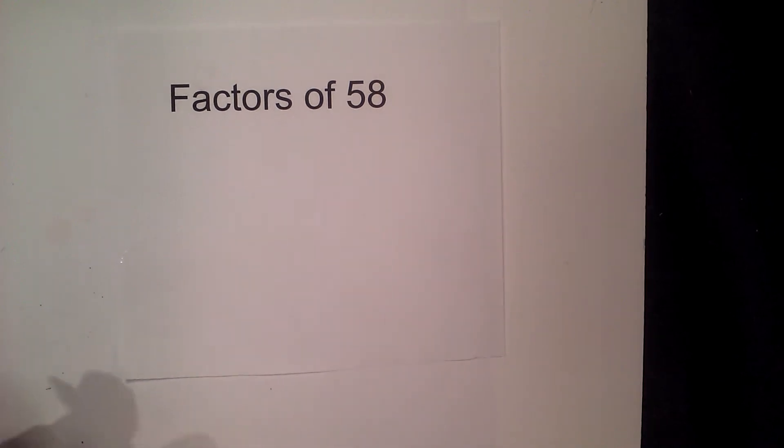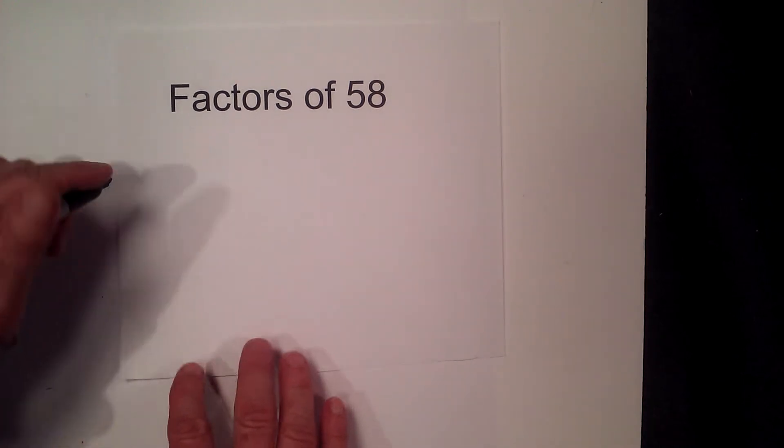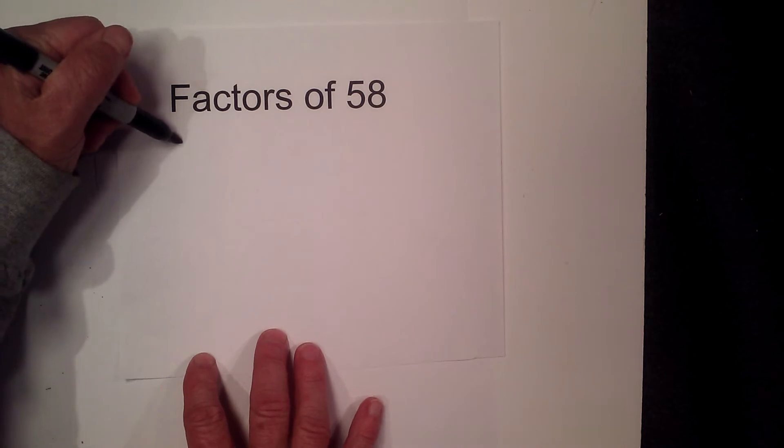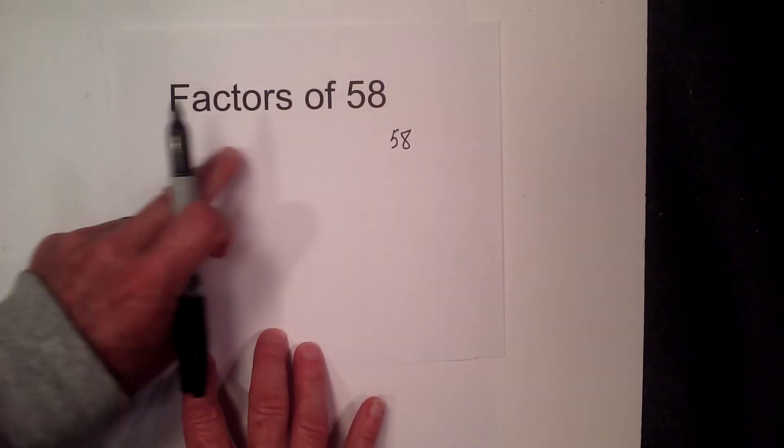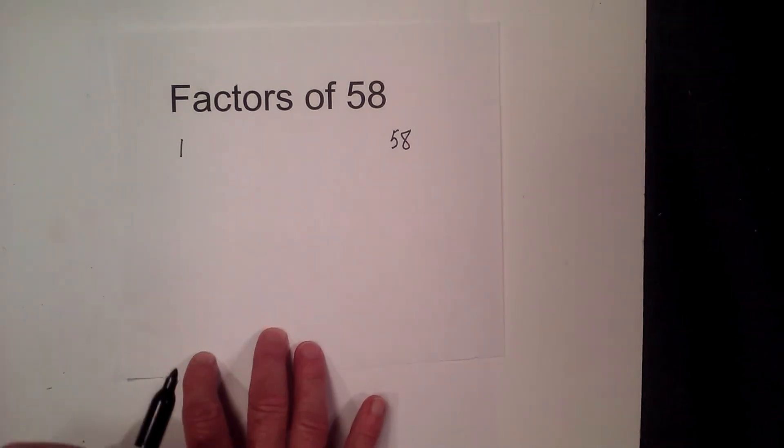Math and science and the factors of 58. Let's go ahead and get started. It is a composite number. I like to begin with 1 times 58 and find the numbers in between that multiply together.